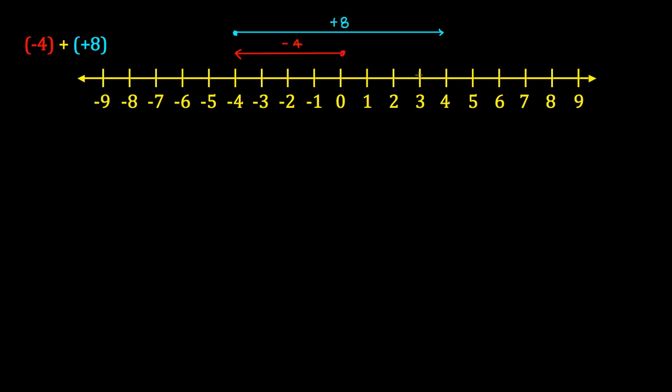So you ask yourself, what exactly do we have? What is the net result of what we have here? A negative four added to a positive eight. Well, that would be no different than starting at zero and finishing out at positive four.